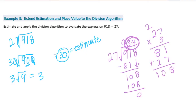Our estimate is very close to our algorithm result because 918 rounded to 900 is only 18 less, and 27 rounded to 30 is a small increase. This is why it's important to see how much you're adding or removing in your estimates — that determines how close or far your quotient will be from your estimate.